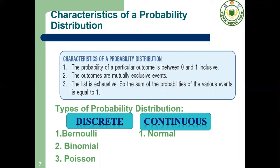Dear cadets, there are two types of probability distribution: discrete distribution and continuous distribution. Binomial distribution and Poisson distribution are discrete probability distributions, and normal distribution is a continuous probability distribution.